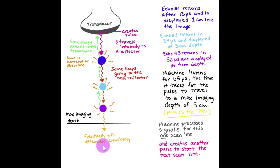Eventually that sound will attenuate to the point that the transducer is no longer collecting information from the reflections. If the sound weakens or attenuates before the max imaging depth is achieved, then what we typically have in our far field is just blackness — the sound never got there. However, if the sound is strong enough to get to the max imaging depth, the machine will stop listening at that point because it's ready to start the next pulse.